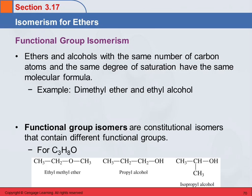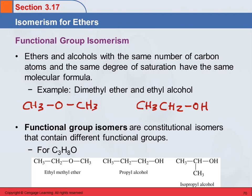Functional group isomerism is where, again with isomers, the molecular formula is always the same — but the functional group is different. So let's look at dimethyl ether and ethyl alcohol. Dimethyl ether is the common name; that has two methyl groups attached to the oxygen — oxygen in the middle with a methyl group on each side. Ethyl alcohol would be ethane with an alcohol group on it. Both are C2H6O, but one is a member of the ether group and one is an alcohol.